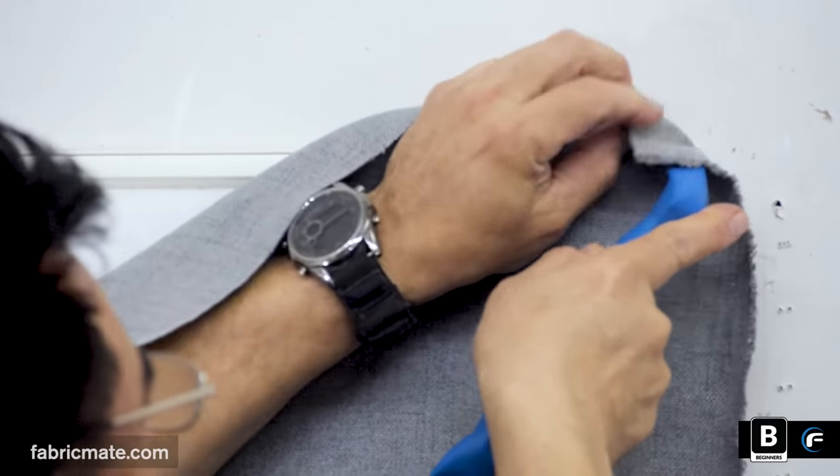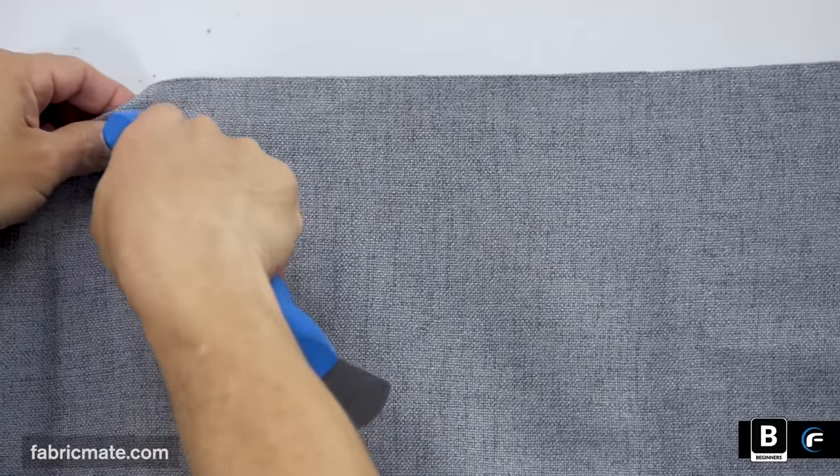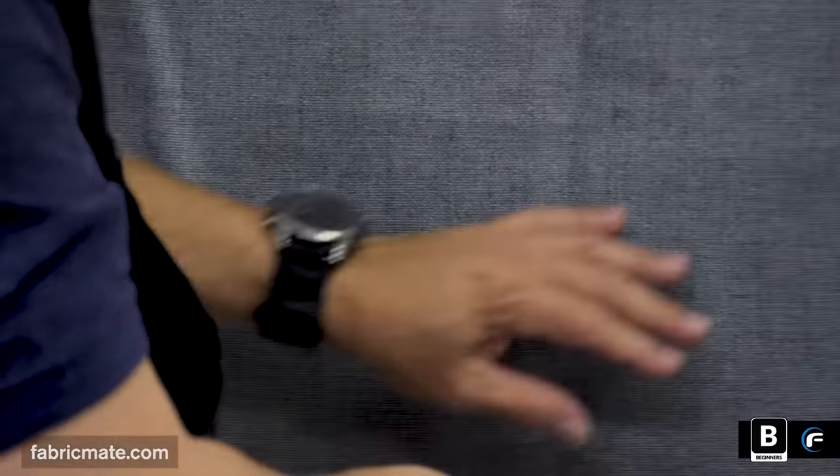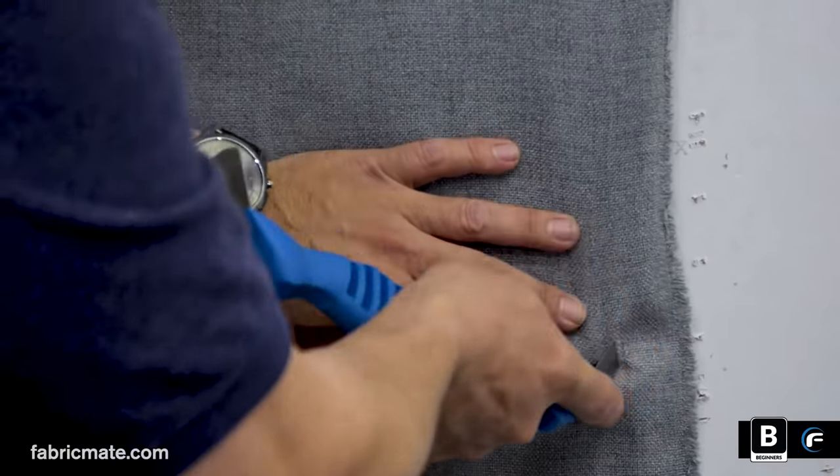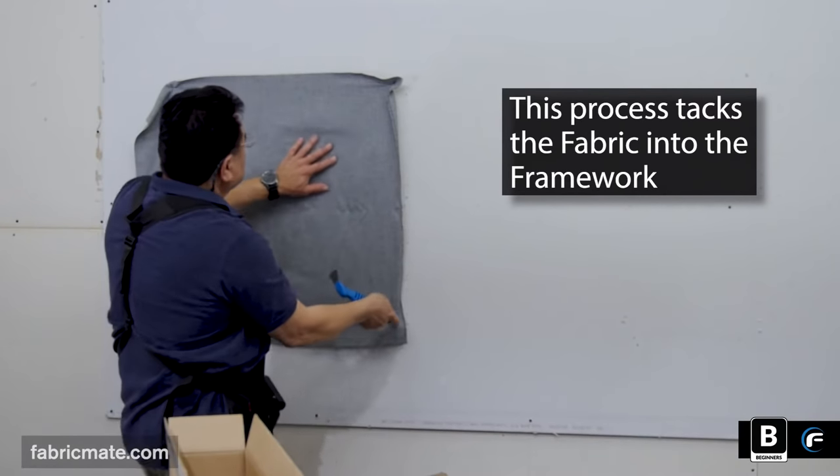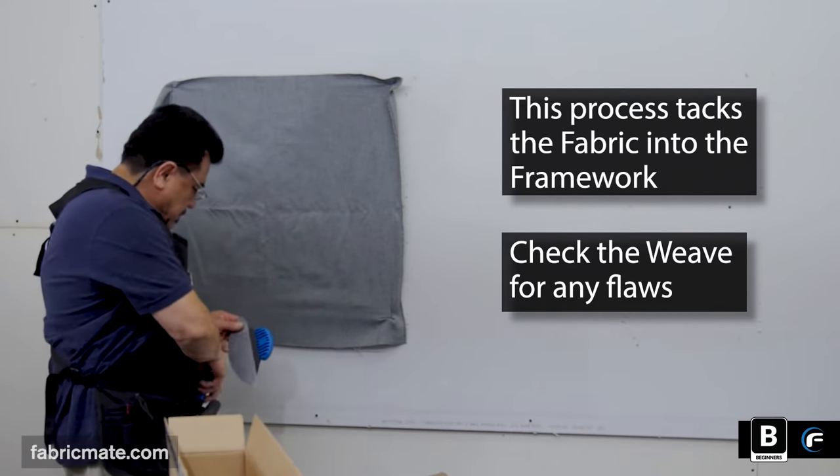You want to start in the corners. And this is the same method you would do if you were doing a 4x6, 4x8, 3x7, any kind of a square or rectangle. You're going to start with the corners. You're going to get it tacked. At this point, what you're doing is tacking it onto the framework. And you're making sure that the weave, you're looking at the face of it, making sure there's no flaws. You're looking at the weave.